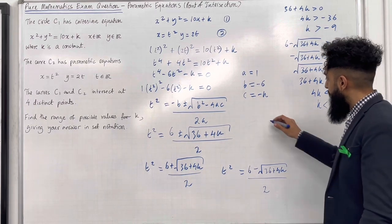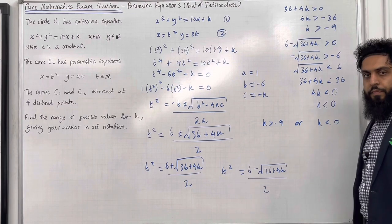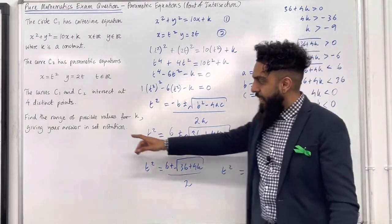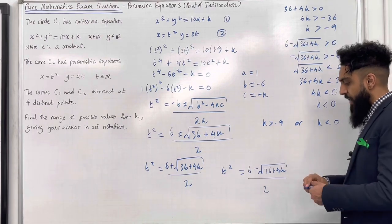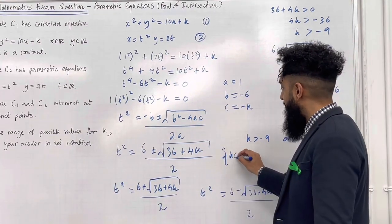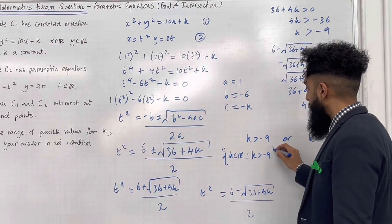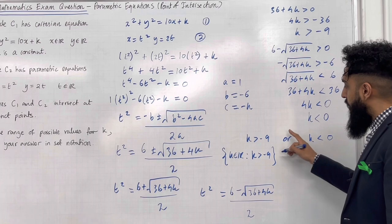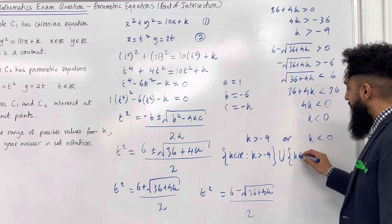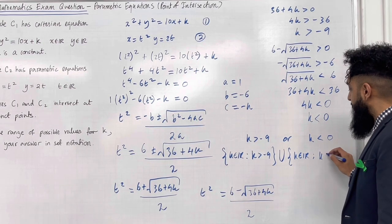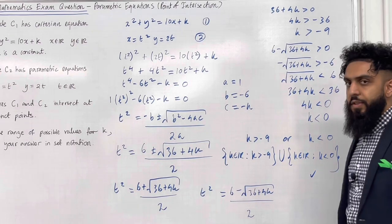So we have that k is greater than minus 9, or k is less than 0. We must give our answer in set notation. In set notation, this is written as: the set of k in the real numbers such that k is greater than minus 9, union the set of k in the real numbers such that k is less than 0. That is the final answer to this exam question.